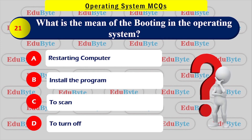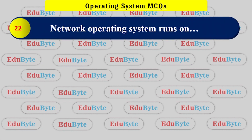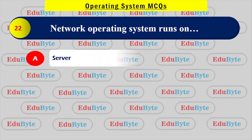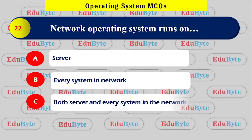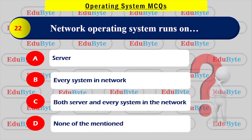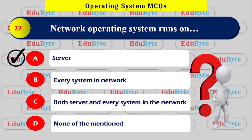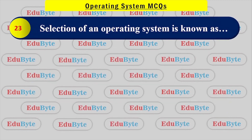A network operating system runs under which environment? Options: every system in the network, server, not mentioned. The correct answer is server — a network operating system runs on a server.